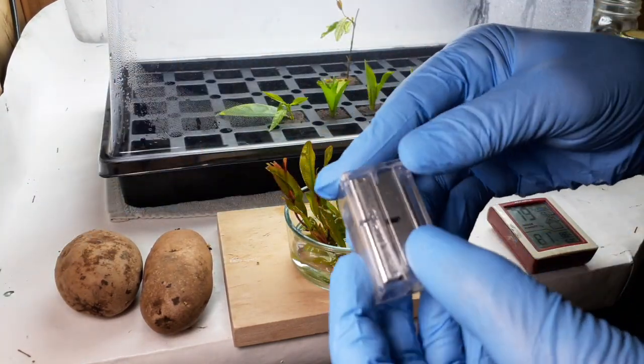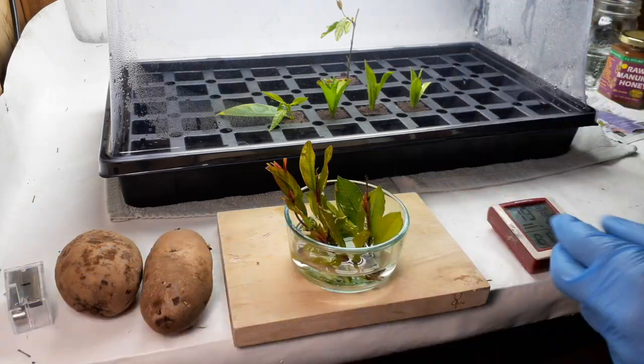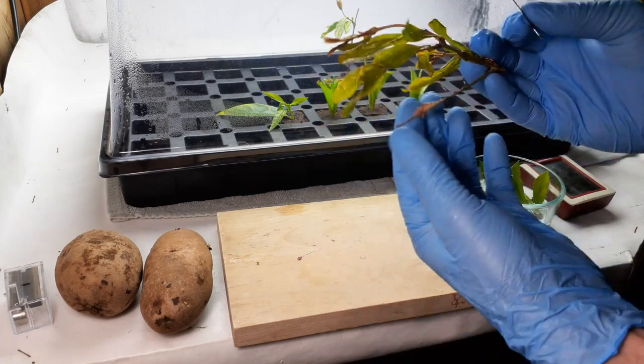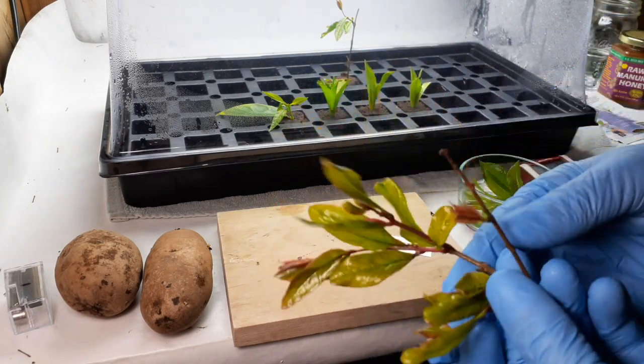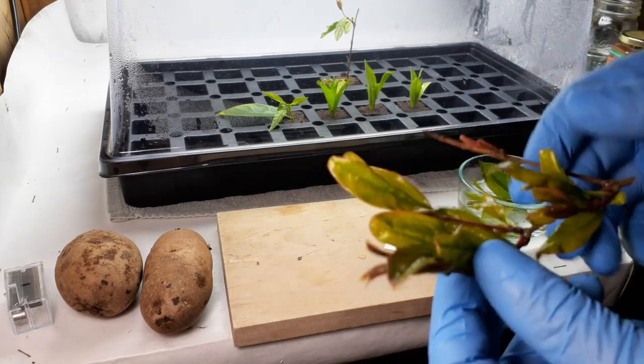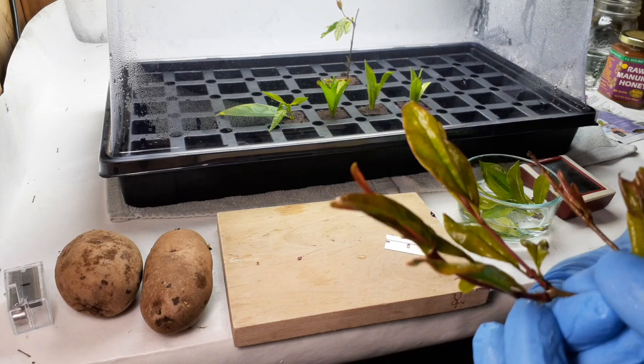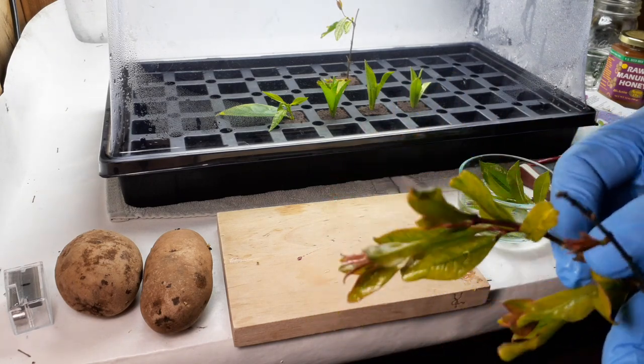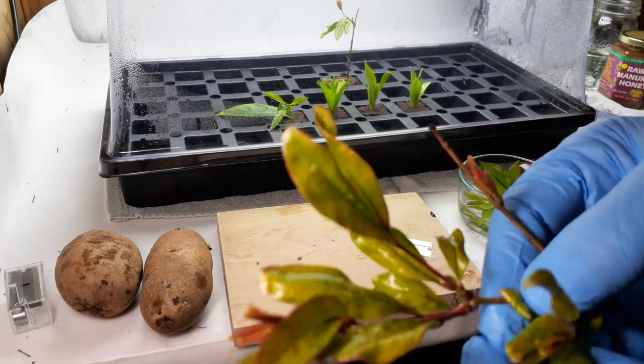Let's go ahead and prep these. This is kind of new growth here. You can see this is the pomegranate. See that red part? The harder wood is the wood you can kind of tell. You have to make a decision. Ideally you want to have the soft material going into your medium.